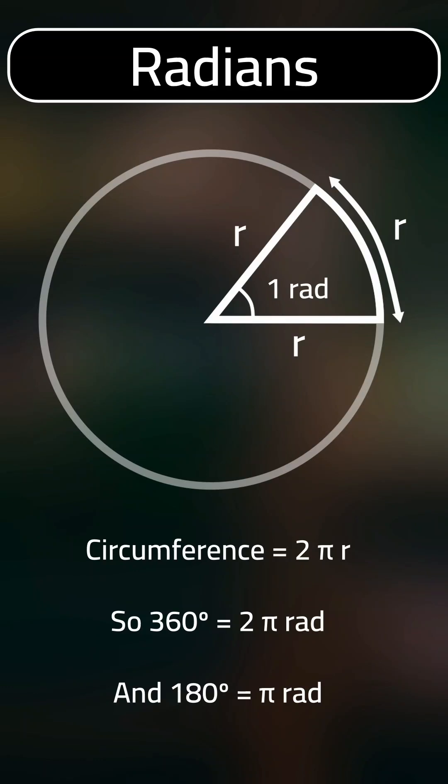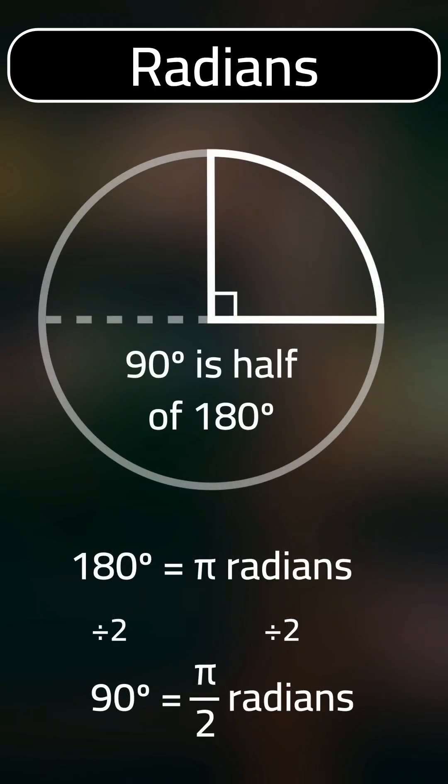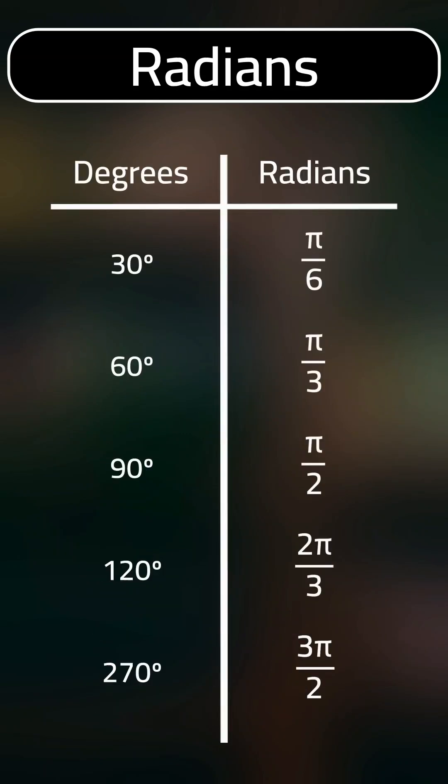We can now use simple proportions to easily convert between degrees and radians. For example, 90 degrees is half of 180 degrees, so it is also half of pi radians. We can do something similar for a selection of commonly seen angles.